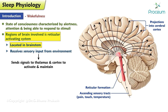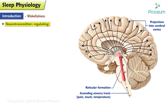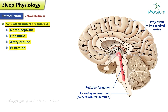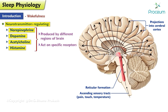Neurotransmitters such as norepinephrine, dopamine, acetylcholine, and histamine are also involved in regulating wakefulness. These neurotransmitters are produced by different regions of the brain and act on specific receptors to modulate arousal, attention, and other aspects of wakefulness. The hypothalamus is another important region involved in regulating wakefulness — it produces hormones such as orexin and cortisol, which help to maintain wakefulness and regulate the sleep-wake cycle.